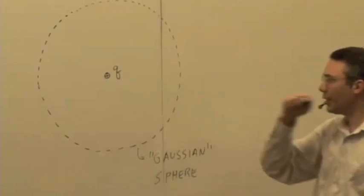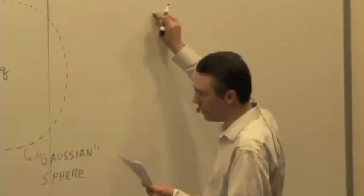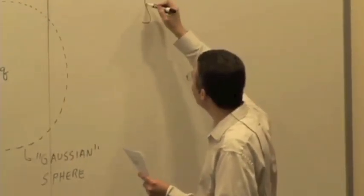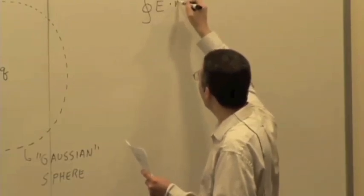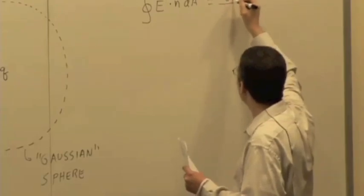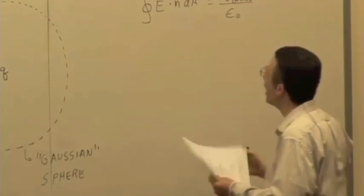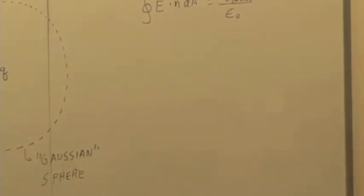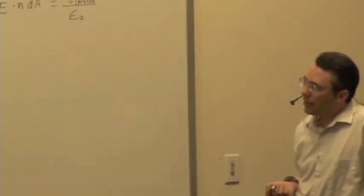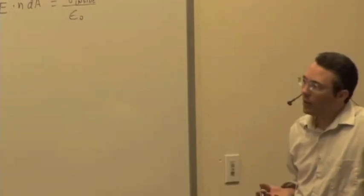So I have a charge in a closed surface, and I want to think about how to apply Gauss's Law to this situation. We have the integral of E dot n-hat dA equal to the charge inside divided by epsilon-naught. And this is one of a very small number of situations where you can actually use Gauss's Law to calculate the electric field on the surface.